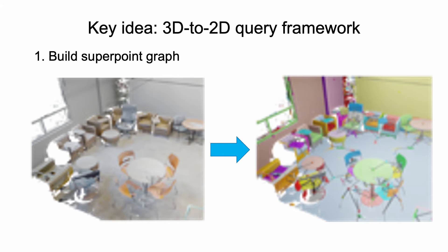In this paper, we propose a novel 3D segmentation approach based on a 3D-to-2D query framework, which effectively utilizes 2D segmentation models. Unlike previous methods that generate multiple masks from multi-view images first, our approach begins with a pre-segmentation of the 3D scene into several superpoints. Then, we construct a superpoint graph of the target scene and transform the problem into graph segmentation.